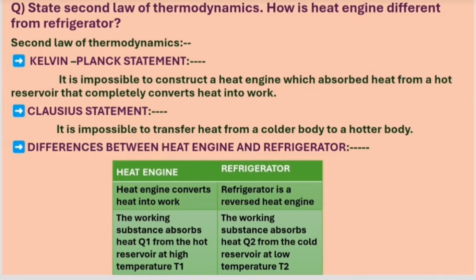Next is the Clausius statement. It states that it is impossible to transfer heat from a colder body to a hotter body. As per nature's rule, everything transfers from high temperature region to low temperature region, that is from high potential to low potential. But it is impossible to transfer heat from a low temperature region, that is a colder body, to a high temperature region, that is a hotter body, without the help of any external agent.